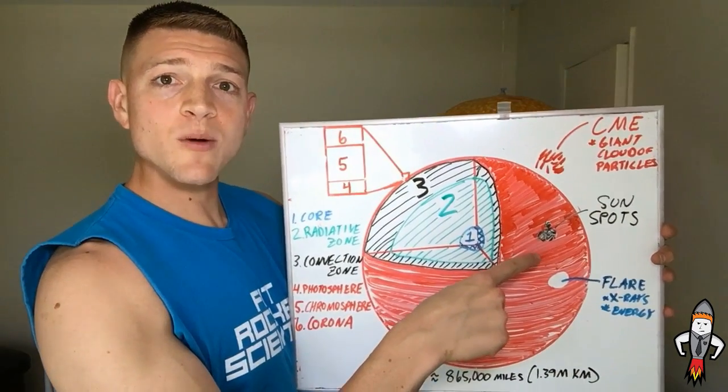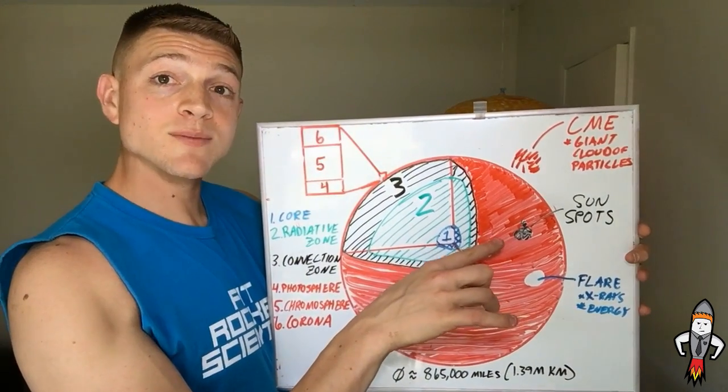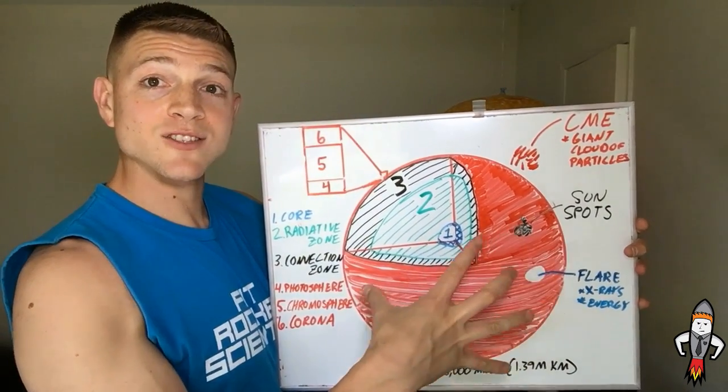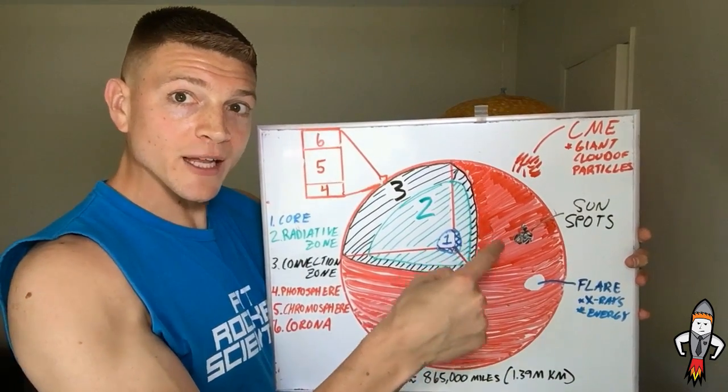And then we have sunspots. So they appear black on a lot of pictures, but they're not black. The reason they appear black is because they're just not as hot as the surrounding area. So it's just less extremely hot here, super extremely hot here.